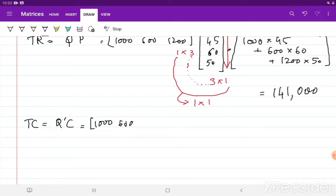So that is Q transpose and my cost matrix or C, I am keeping it as a column vector: 38, 42, 32.